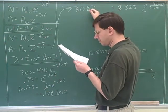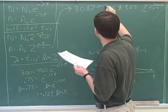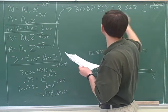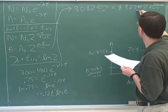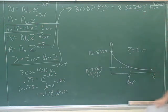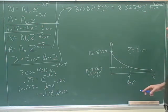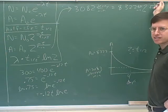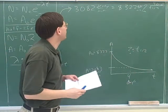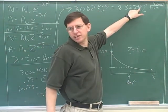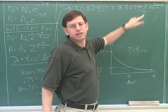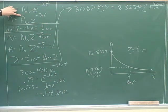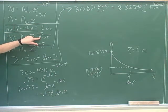What are the units on the 3082? Decays per minute. And what are the units on the 8322? Decays per minute. The units of A and A zero have to be in the same units, and then when you simplify, the units will cancel. And T and T one half have to be in the same units.